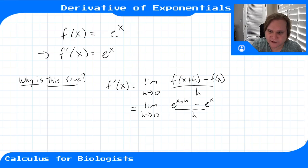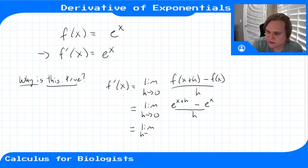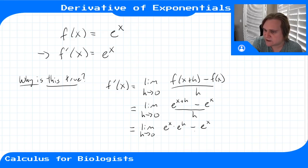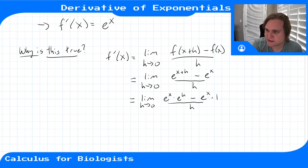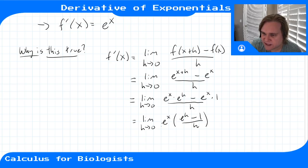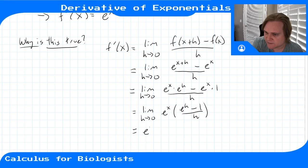Using rules of exponents, we turn e^(x+h) into e^x times e^h. So the expression becomes the limit as h goes to zero of (e^x · e^h minus e^x) divided by h. Both terms in the numerator have a factor of e^x, so we can factor that out: e^x times (e^h minus 1) over h. Since e^x doesn't depend on h, we can pull it out of the limit, giving us e^x times the limit as h goes to zero of (e^h minus 1) over h.